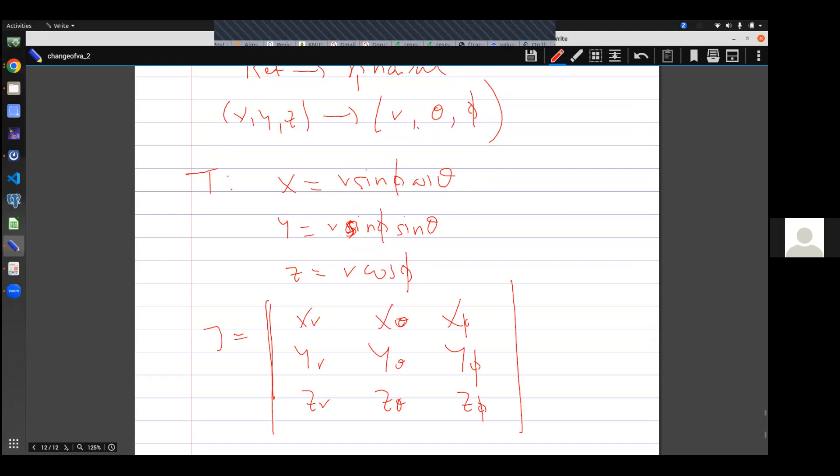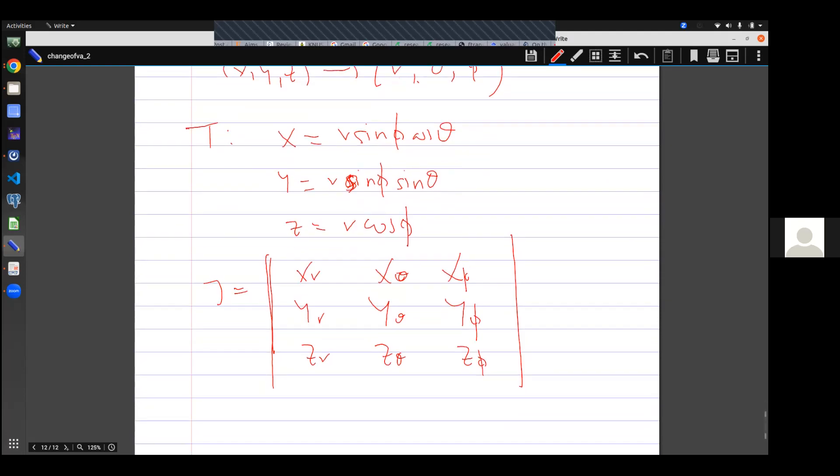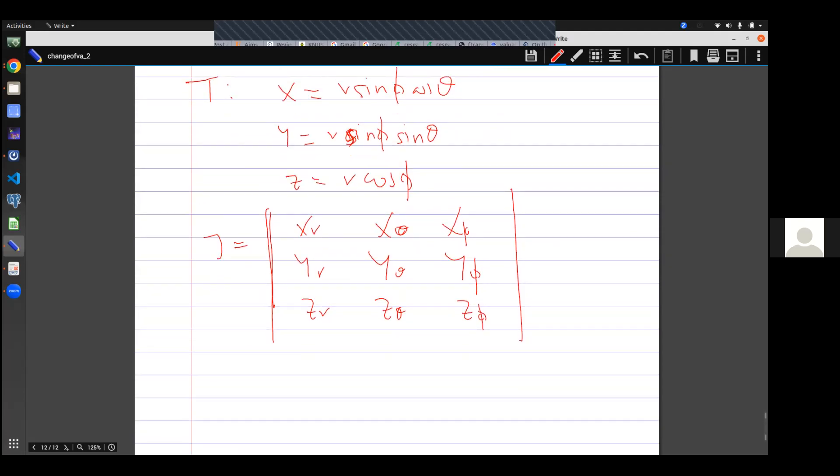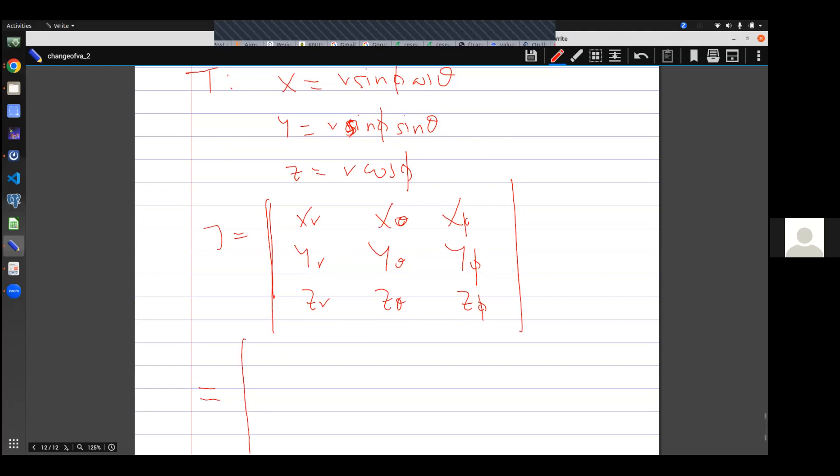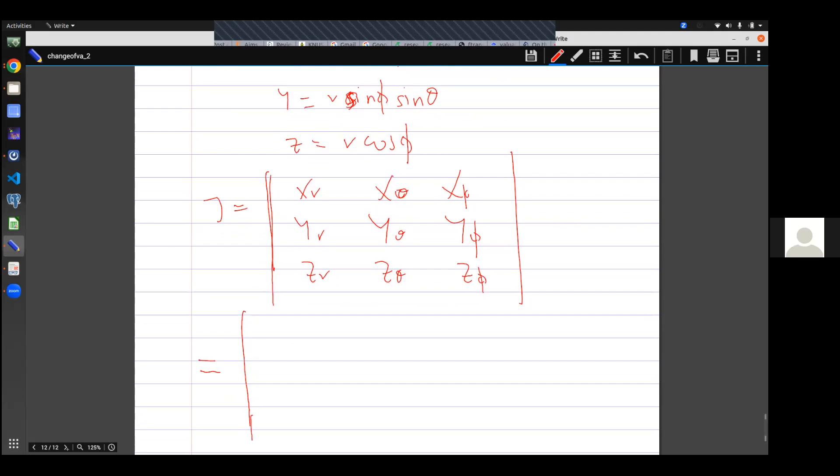You must take your time when you are doing the partial derivatives, else you will not get the desired result. So I'll quickly write out what I expect in this 3 by 3 matrix. So ∂x/∂r, I'm going to get sin φ cos θ. With respect to θ, I'll have negative r sin φ sin θ.